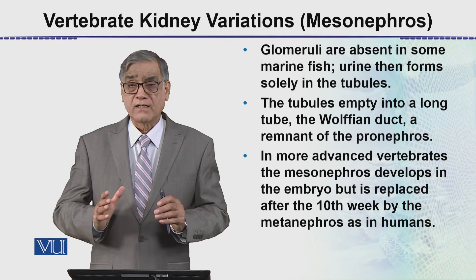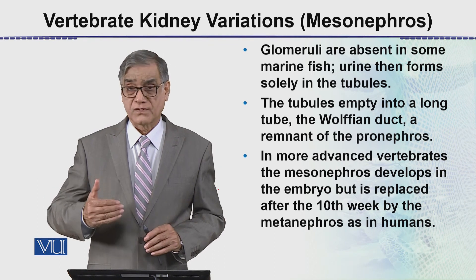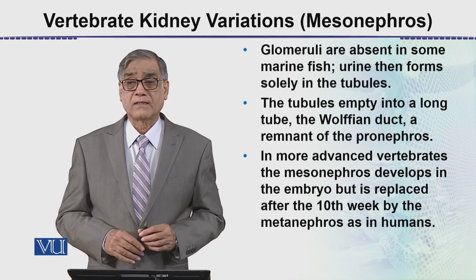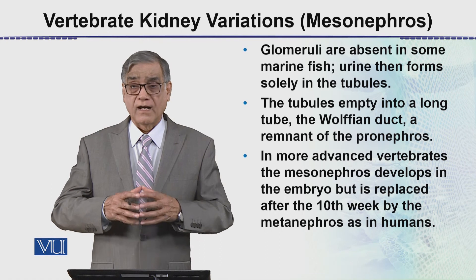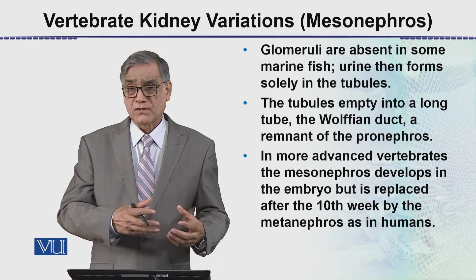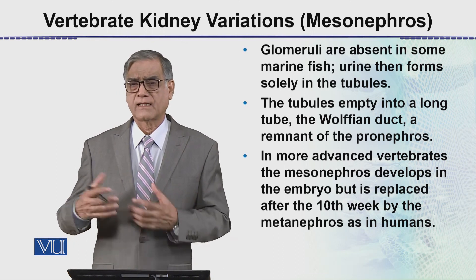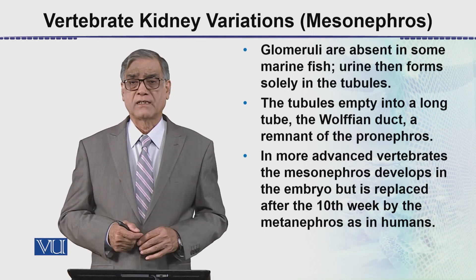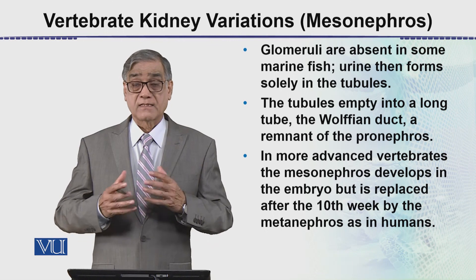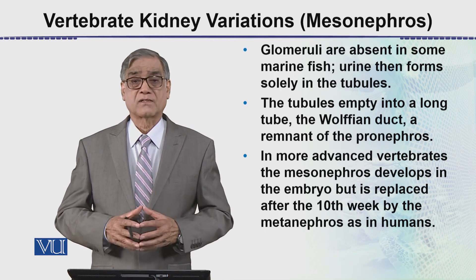Mesonephros adult kidney ہے amphibians کے اندر اور advanced fishes جیسے sharks میں۔ Higher animals جیسے mammals اور birds کے اندر pronephros early form میں بنتا ہے، then it is converted into mesonephros, اور پھر mesonephros shapes into the metanephros which is the adult kidney۔ So this is all about vertebrate kidney variation — the mesonephros۔